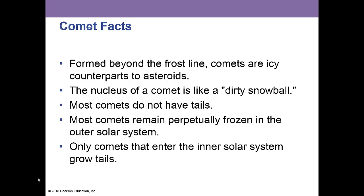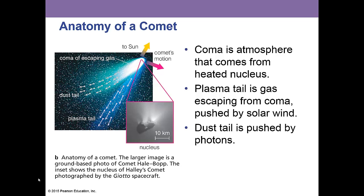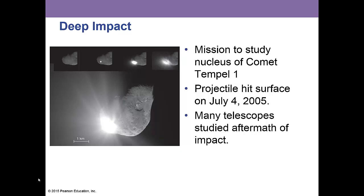Only comets that enter the inner solar system grow tails. The nucleus is like a dirty snowball and is the source of material for the comet's tail. There are two tails: a plasma tail that goes straight out, and a dust tail that hangs on to the orbit behind the comet. The coma is an atmosphere that comes from the heated nucleus. The plasma tail is gas escaping from the coma pushed by solar wind, and the dust tail is pushed by photons.